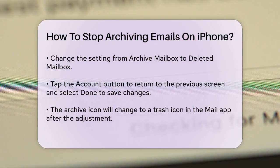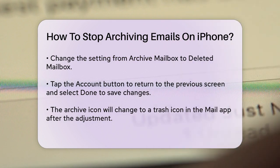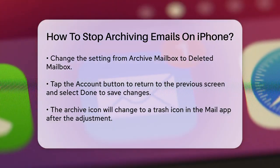Look for the section labeled 'Move discarded messages into' and select 'Deleted Mailbox' instead of 'Archive Mailbox.' Once you've made this change, tap the Account button at the top left corner to go back to the previous screen, and then tap Done to save your changes.